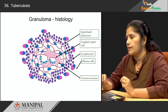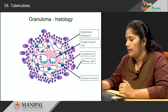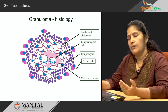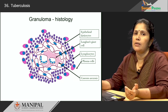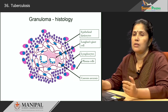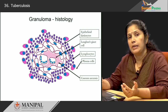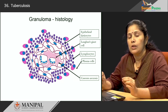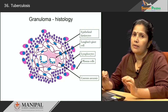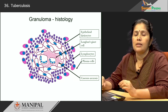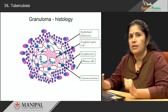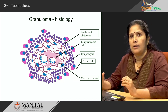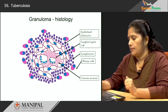Please remember that the hallmark lesion of tuberculosis at any site is a granuloma — whether it is primary, secondary, disseminated tuberculosis, or tuberculous meningitis. You will always see granulomas in the histology of these biopsies.